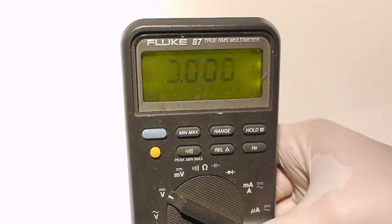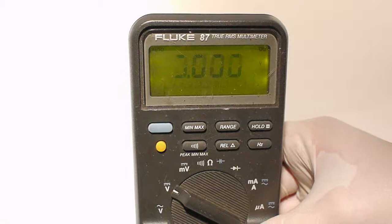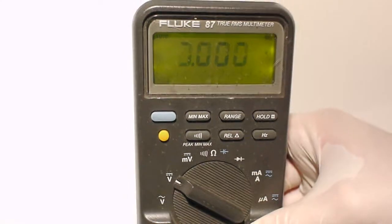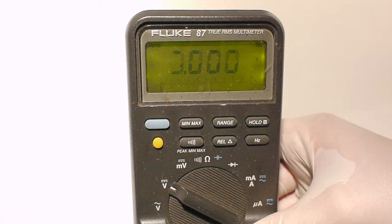Does your Fluke 87 meter look like this? Missing LCD segments? Ghosting, it's faded, it's fading, it's gone.